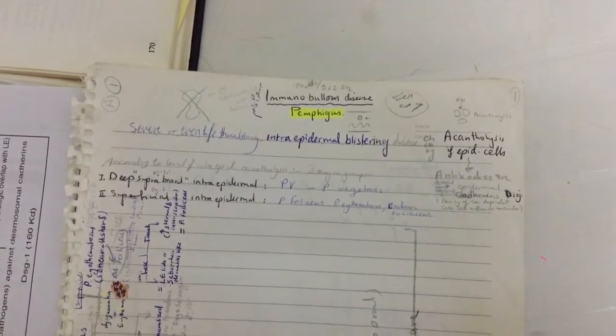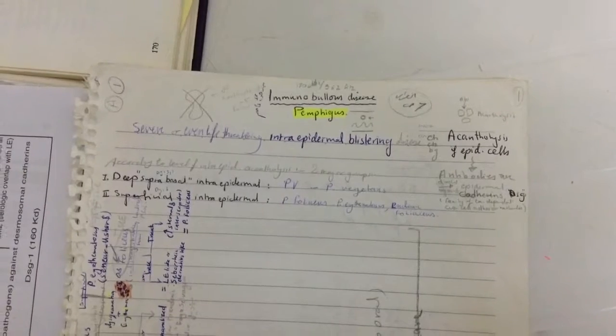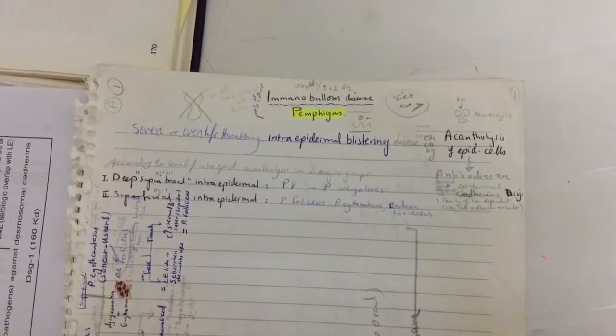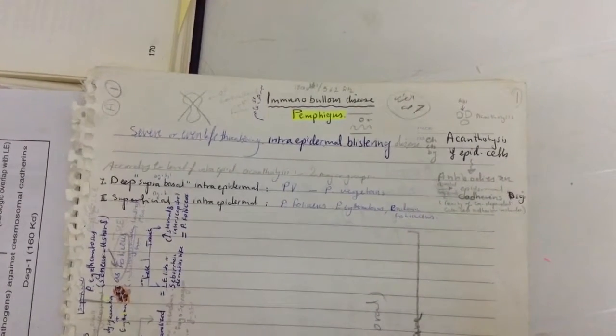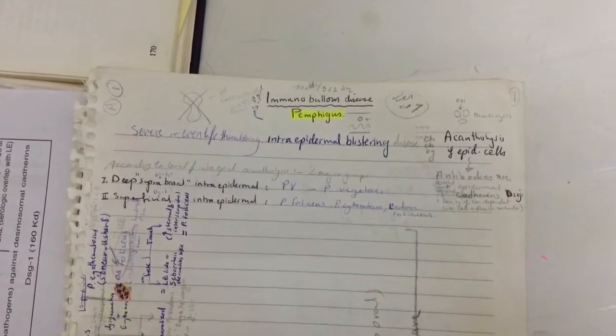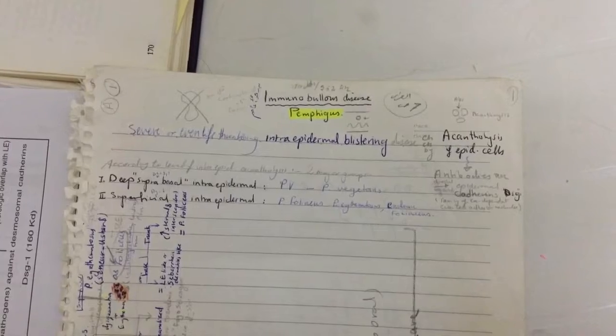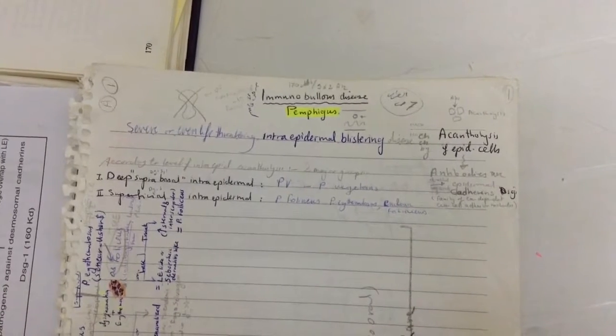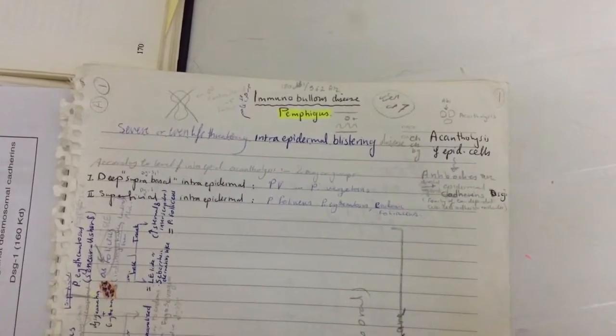The deep suprabasal intra-epidermal group includes pemphigus vulgaris and pemphigus vegetans. The superficial intra-epidermal group includes pemphigus foliaceous and pemphigus erythematosus.